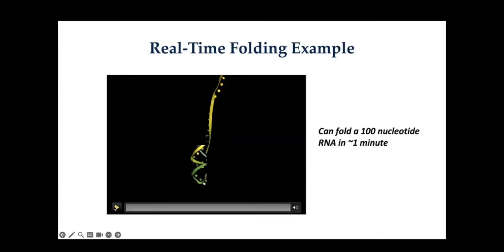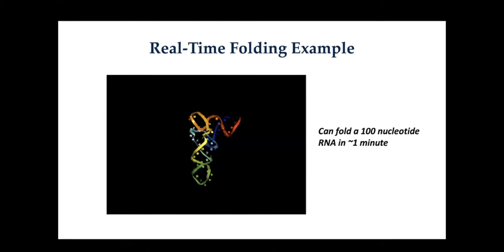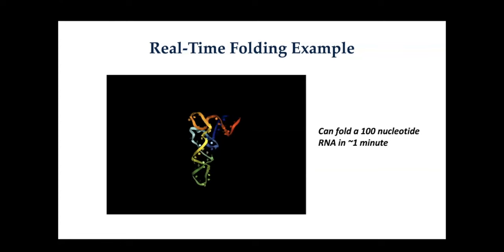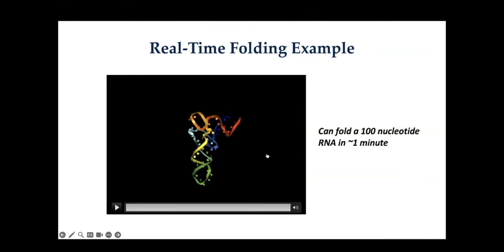Here's an example from a 100-nucleotide RNA. We can fold a 100-nucleotide RNA in about one minute. The initial part of the simulation determines the global fold very quickly, and then toward the end there are minor optimizations. One nice thing about LBFGS is that it's very fast, though it can get trapped in local minima. If restraints are predicted accurately, the global structure should be accurate and we can produce structures rapidly.